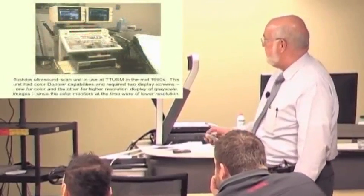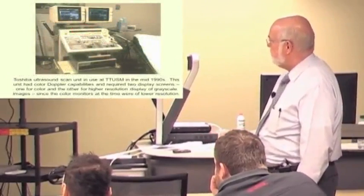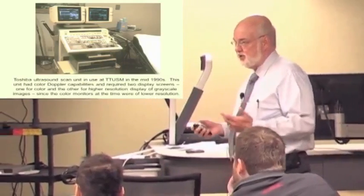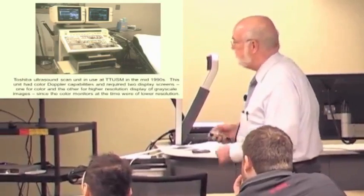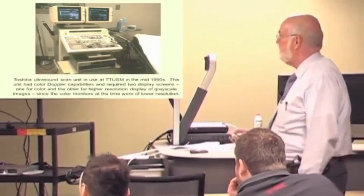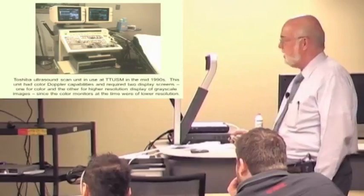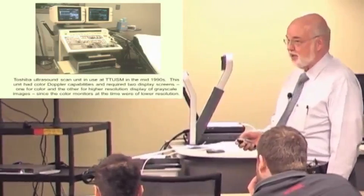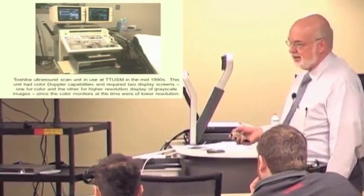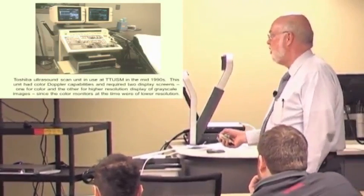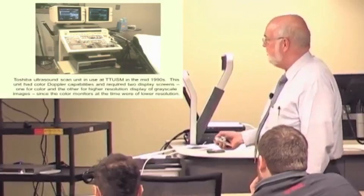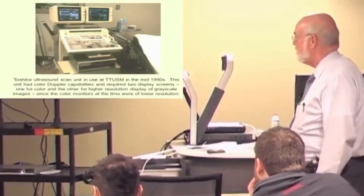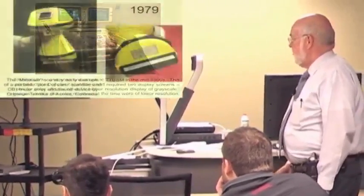By the mid-1990s, we had this unit, which was from Toshiba. But the thing to notice is it has two monitors on it. By this time, we have real-time moving pictures. And we'll talk about how you do that when we get to transducers in a minute. But it had to have the two monitors because by now we were doing color Doppler. The color monitors at the time were not high enough resolution to display the grayscale images. So you actually had to have one monitor for gray information and one for color information. And this thing obviously is the size of a good-sized washing machine.